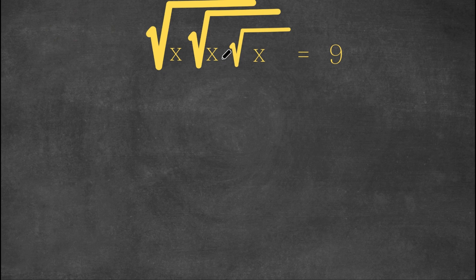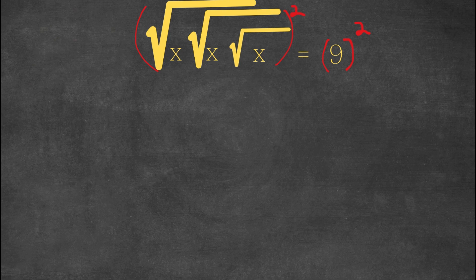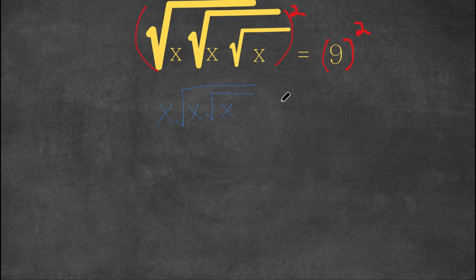So right here we have the square root of x times the square root of x times the square root of x. What we're first going to do is we're going to square both sides — we're going to square this side and we're going to square this side. This side squared will simply cancel out this first square root, so we're going to have x times the square root of x times the square root of x. And for this side we're just going to have 9 squared — we're going to leave it like that for now, we're not going to change it into 81.